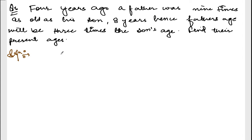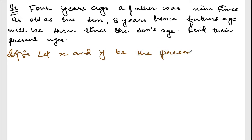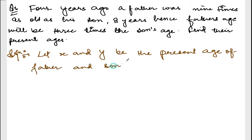They are a father and son. Let X and Y be the present age — present age of father and son respectively. So X is the age of father and Y is the age of son.